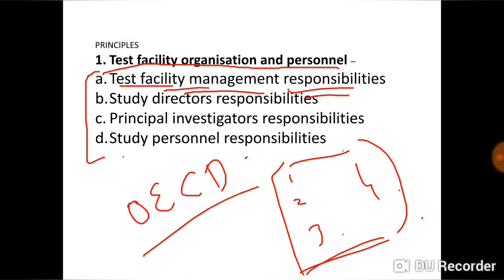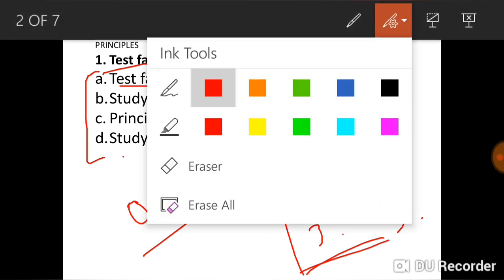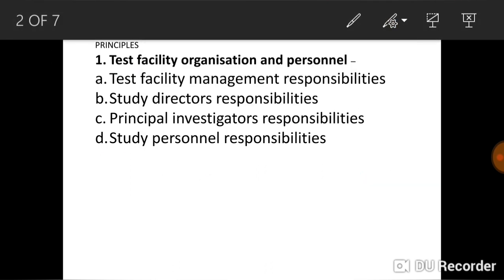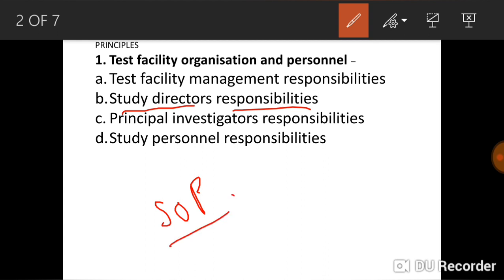The second responsibility is of the study director. The study director ensures that raw data are recorded, that SOPs — Standard Operating Procedures — are followed, and that any deviations are acknowledged. These are the responsibilities of the study director.